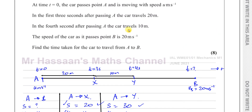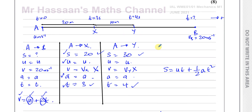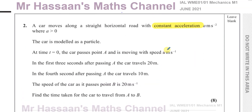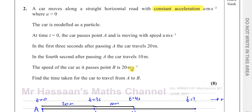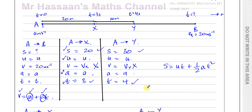I labeled those intermediate points X and Y for clarity — the question didn't name them. Other questions from this paper can be found by clicking the link at the end of the video. Other constant acceleration questions and M1 papers are also linked. You can subscribe to the channel, and in the description you'll find links to P1, P2, P3, P4, S1, and IGCSE papers. Thank you for watching and see you soon.